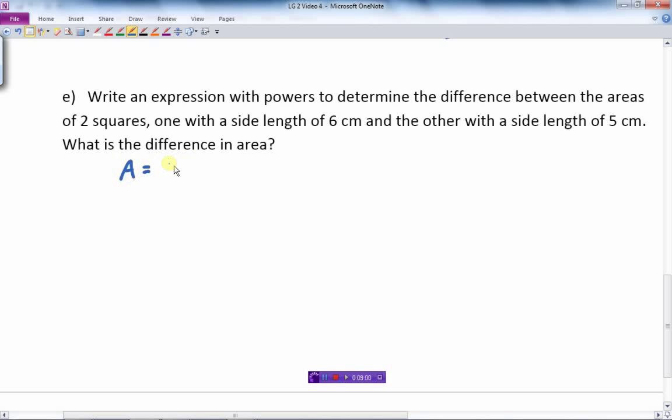Area of a square is just the side squared. So the area of the first one, area 1 equals 6 squared. Area 2 equals 5 squared. Length and width are the same for both of those, they're squares, and so that's to find the area.